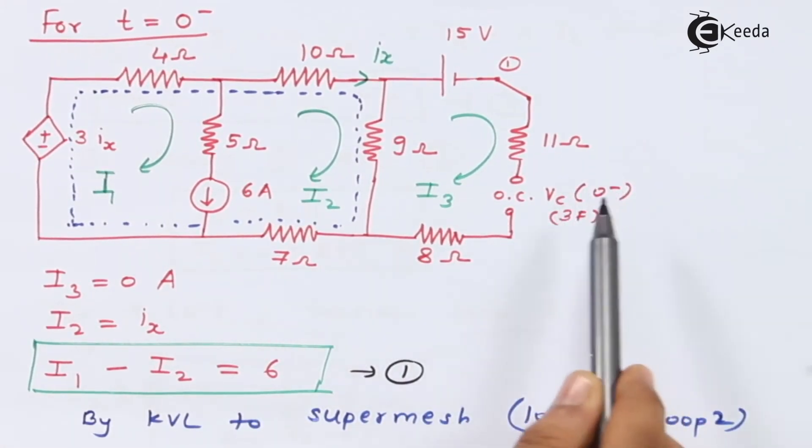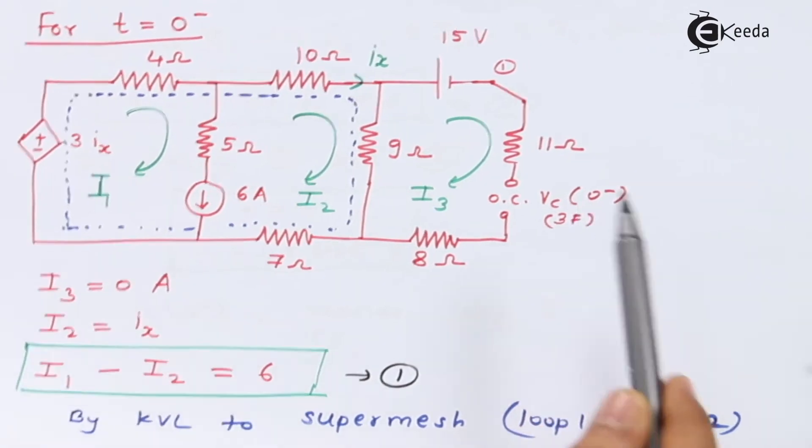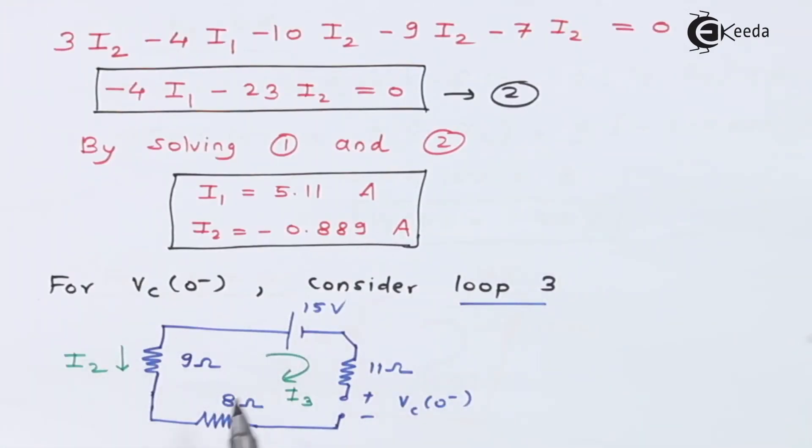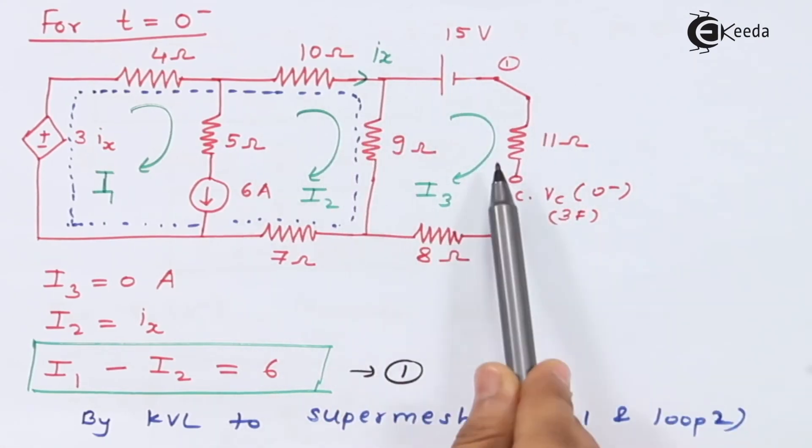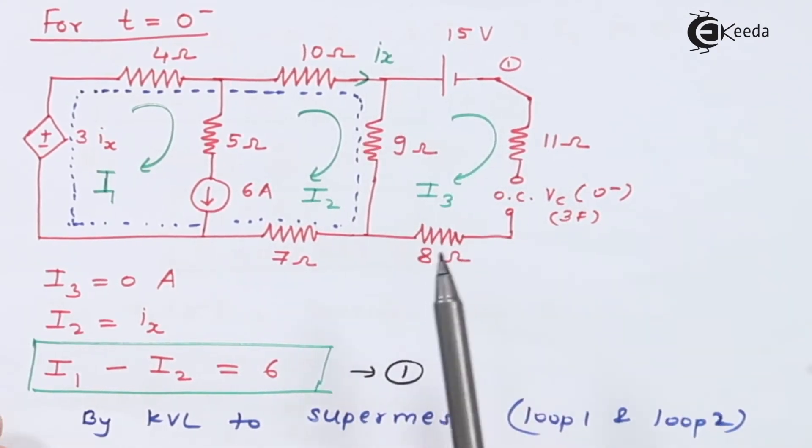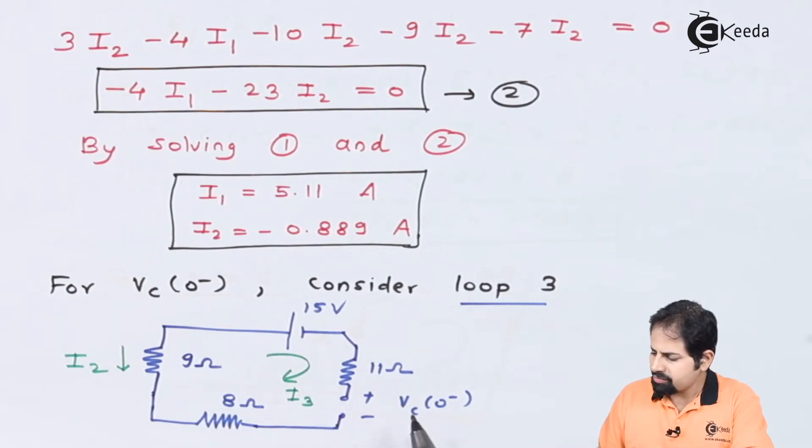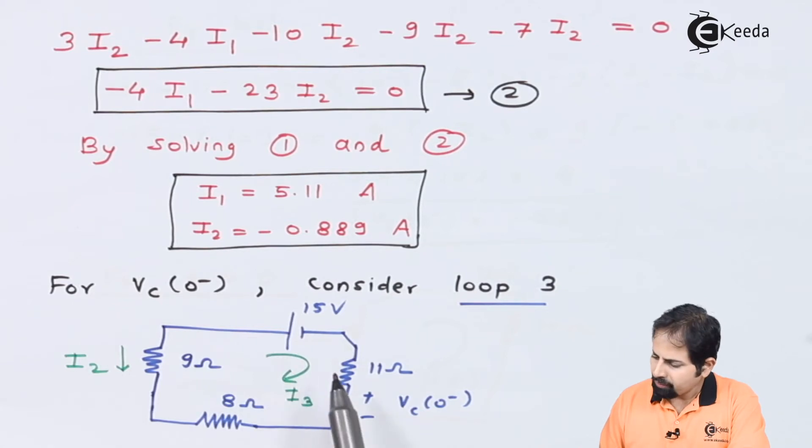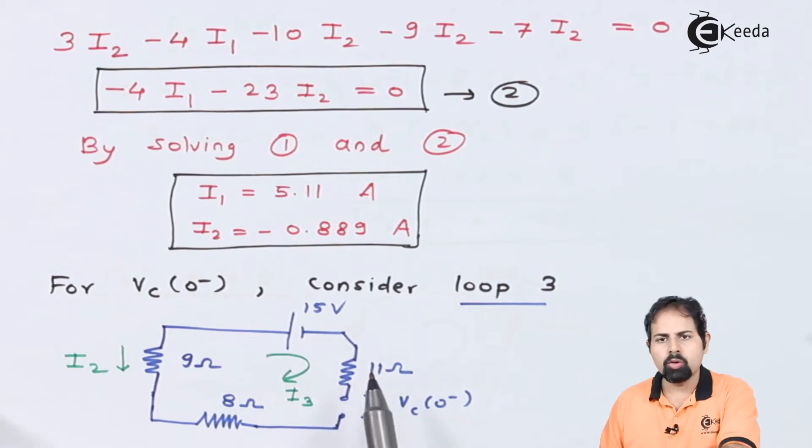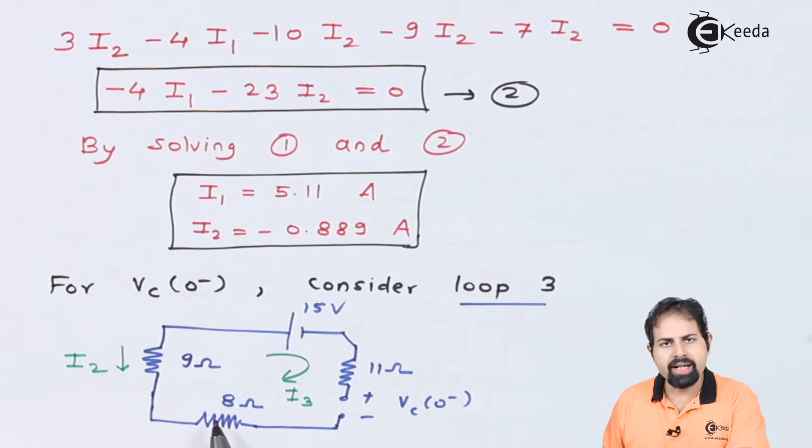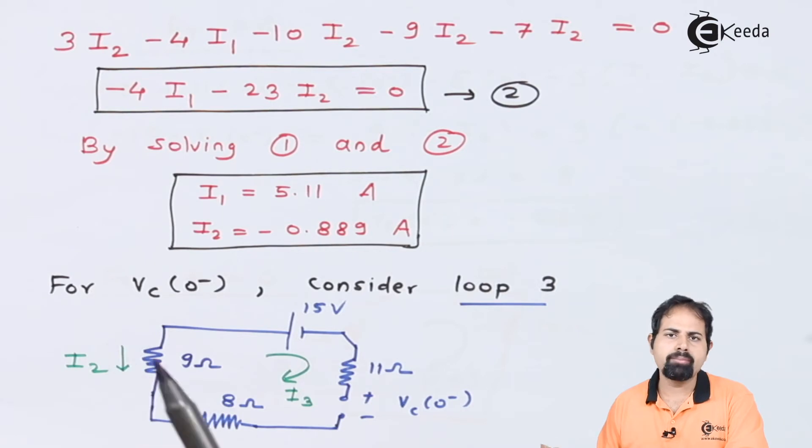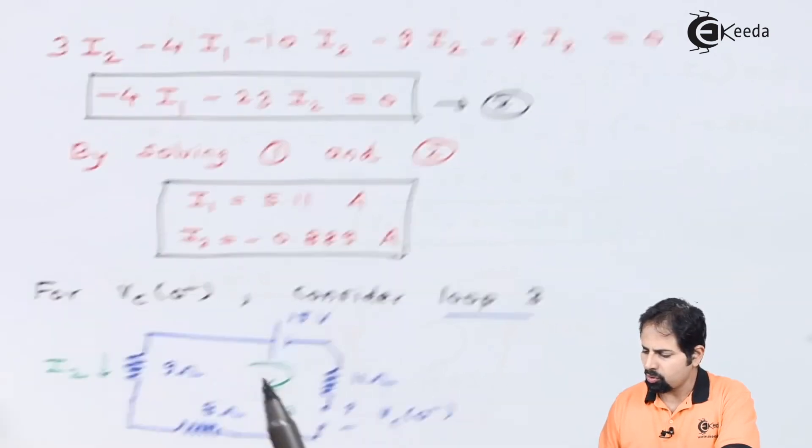So we need to get what is the voltage across this capacitor. For that I have drawn this diagram. Only this loop number 3 is what I have drawn separately here. And this is Vc of 0 minus. So if I apply KVL again to this loop in clockwise direction, see what we will get: minus 15, then minus 11 into 0 because there is no current I3 is 0, minus 8 into 0. Here also I am going from positive to negative, so I will get minus of Vc.